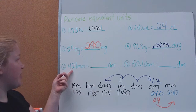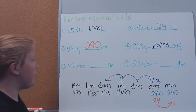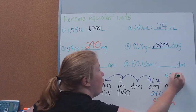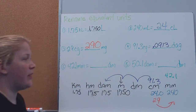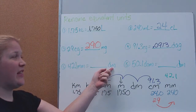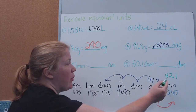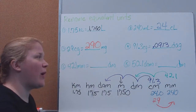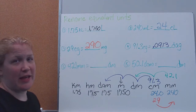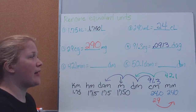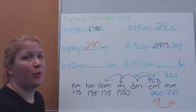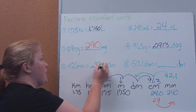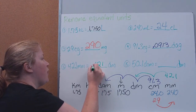Next: 42.1 millimeters converted to decimeters. Starting at milli, I count: one, two spots gets me to the deci prefix. Moving two spots to the left, the decimal also moves two spots to the left, giving me 0.421 decimeters.